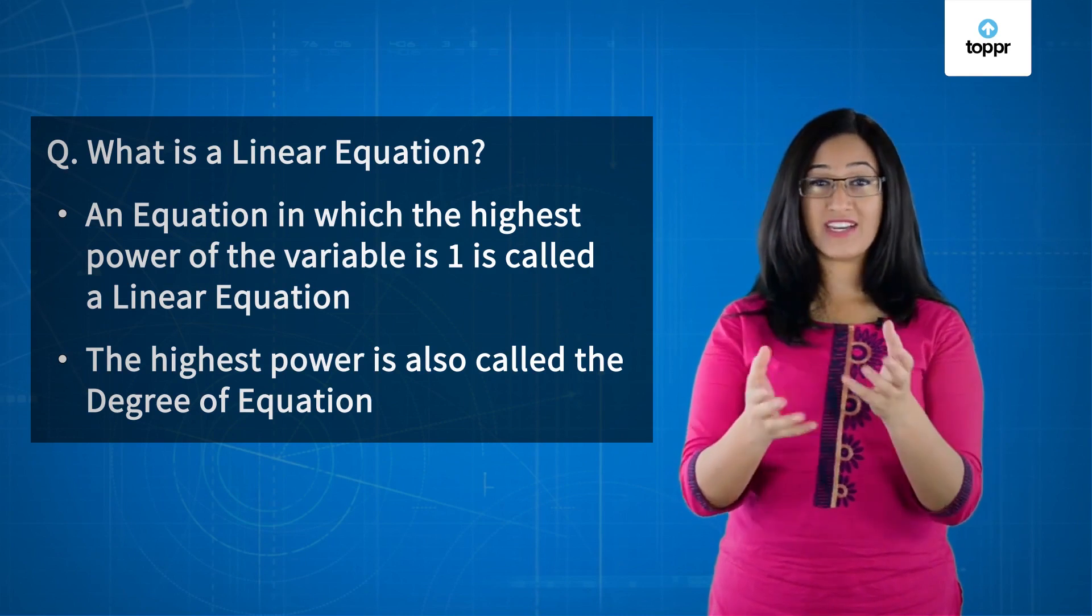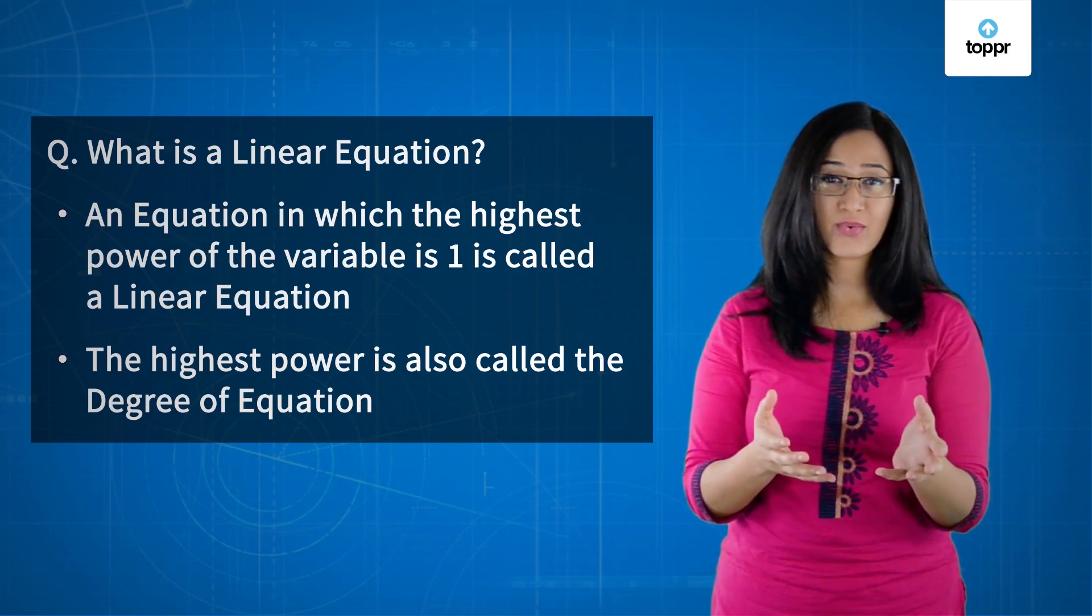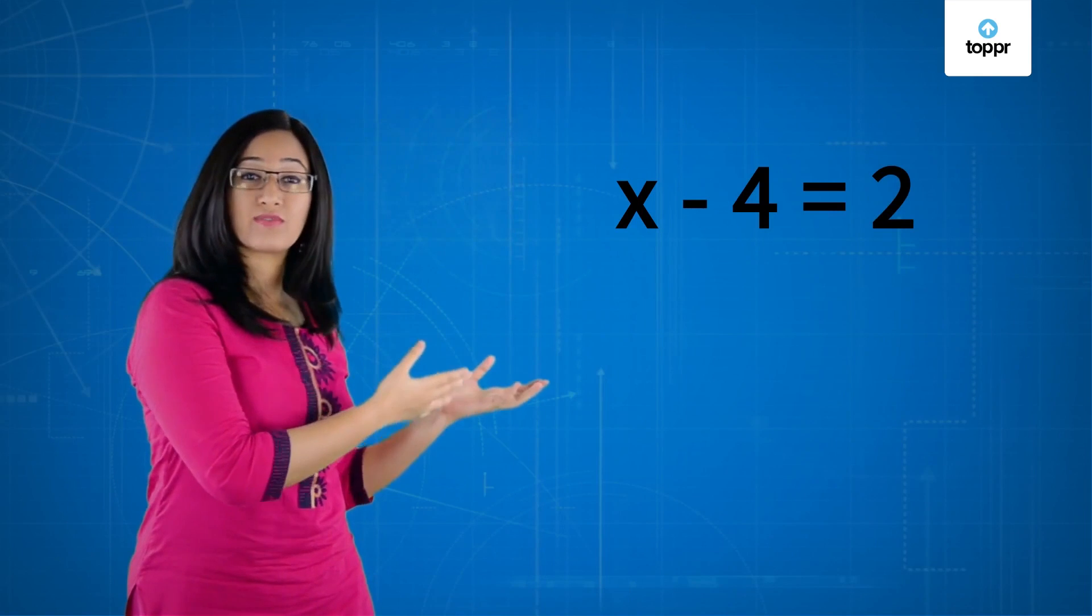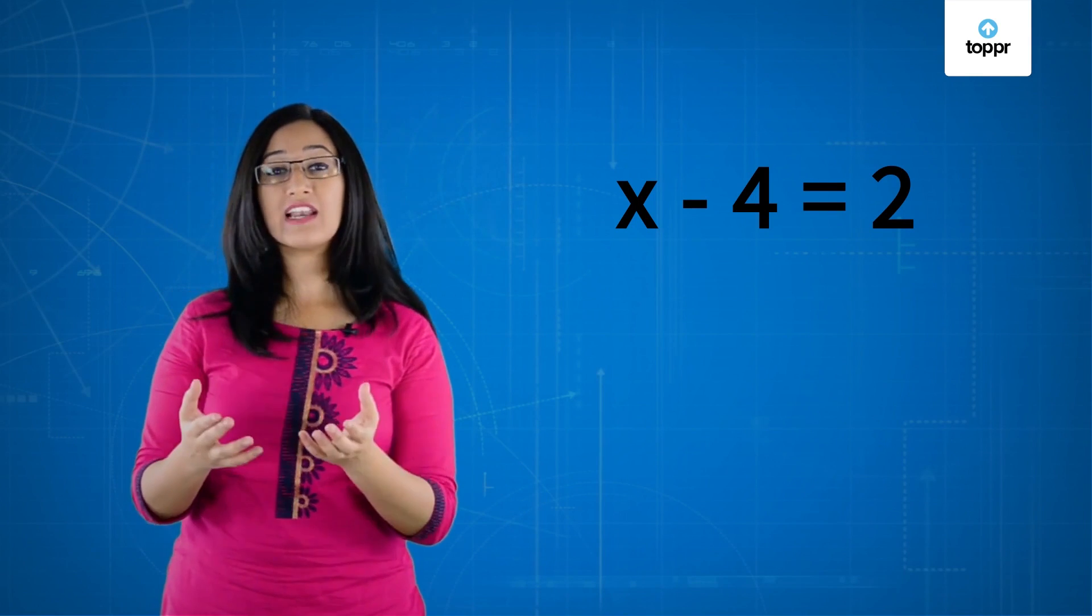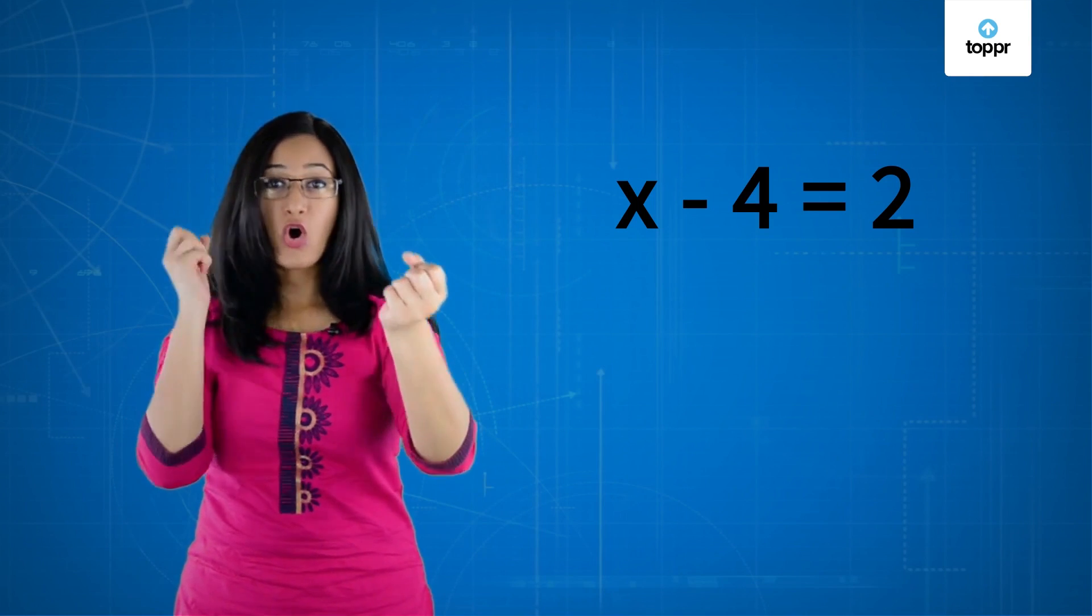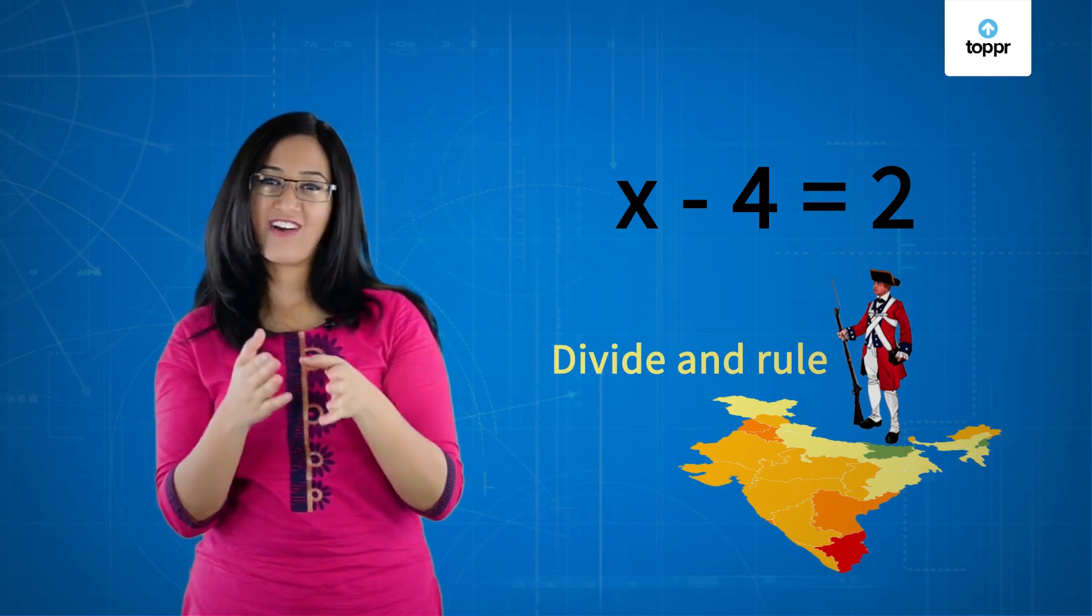So ready to see the rules for how to solve linear equations? Take a look at this equation: x - 4 is equal to 2. Now, to find the value of x, the first thing we need to do is tear apart the variables from the constant. Or as I like to call it, divide and rule.